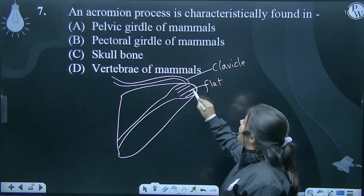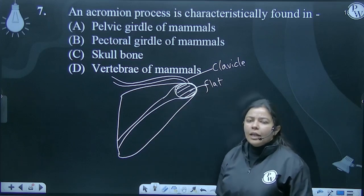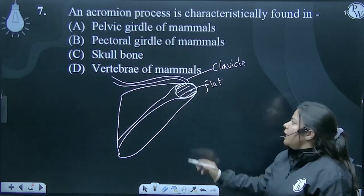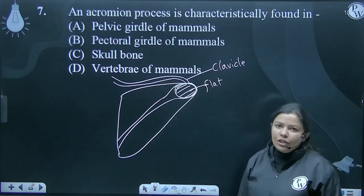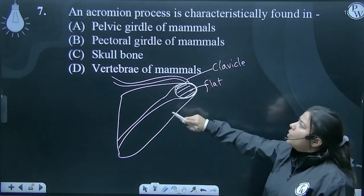So, this process, this flat acromion process is present in scapular region which articulates with clavicle. So, where is it present in acromion process?